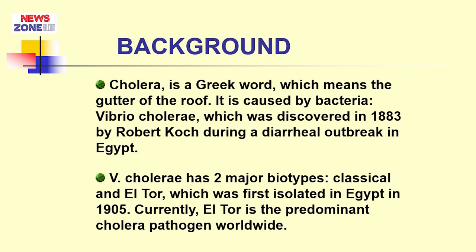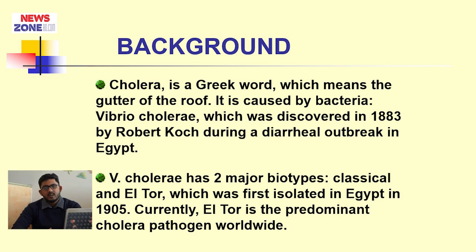The background of cholera: cholera is a Greek word which means the gutter of the root. It is caused by a bacteria known as Vibrio cholerae, which was discovered in 1883 by Robert Koch during a diarrheal outbreak in Egypt. Vibrio cholerae has two major biotypes — classical and El Tor — which was first isolated in Egypt in 1905. Currently, El Tor is the predominant cholera pathogen worldwide.